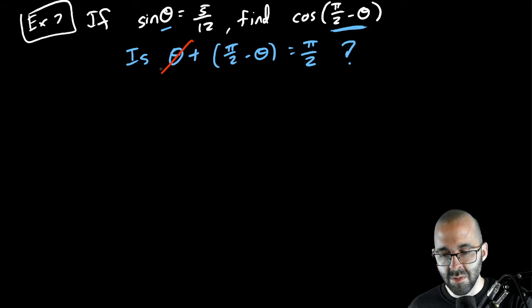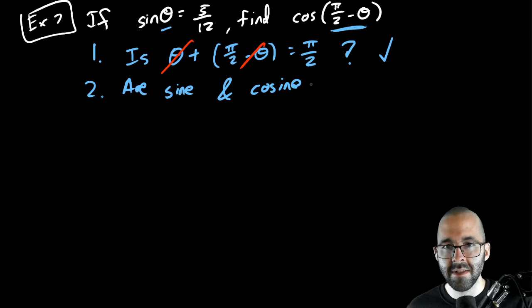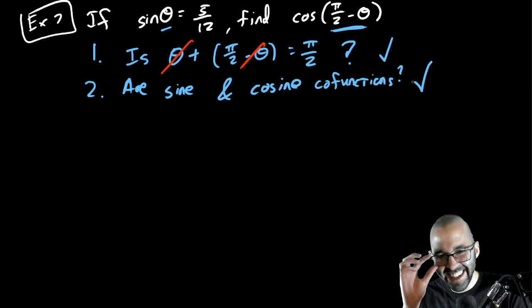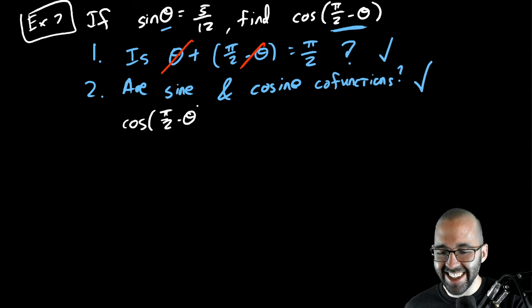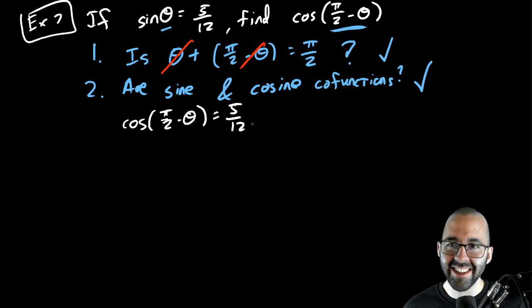If they're complementary, that's step one. We just need complementary and co-functions. Well yes, this is true because plus theta minus theta, pi over 2 is just pi over 2. What's the other thing that we need? Are sine and cosine co-functions? Yes they are. All right, so yes they're going to be the same. Okay, the cosine of pi over 2 minus theta is also equal to five twelfths.